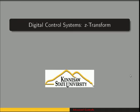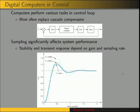This video is for the Z-Transform, which is a mathematical tool that we use to analyze digital control systems. We're going to work with digital control systems, which is a controller with a digital computer in the loop. It often looks like this, where the digital computer replaces the cascade compensator.